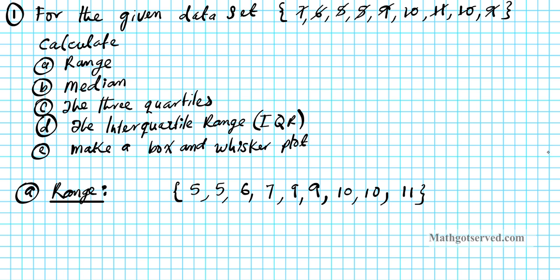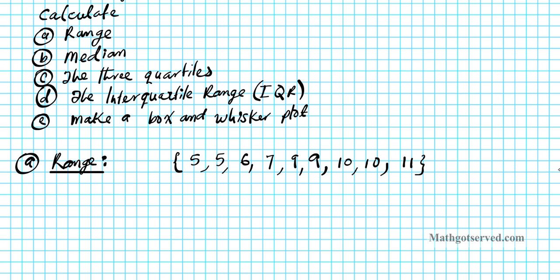The range is basically the biggest minus the smallest. So the range in this case is going to be 11 minus 5, which is 6.